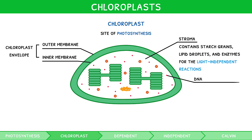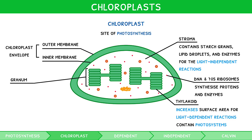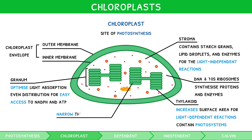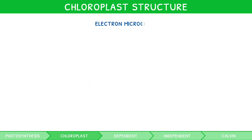They contain their own DNA and 70S ribosomes to synthesise proteins and enzymes. They contain systems of internal membranes known as thylakoids, increasing the surface area for the light-dependent reactions. Within each thylakoid are multiple regions of space with a high density of chlorophyll, known as photosystems, each containing a reaction centre. Thylakoids are stacked on top of one another to form towers known as grana, which form deep towers to optimise light absorption and are evenly distributed throughout the stroma for easy access to NADPH and ATP. Inside the thylakoid is the narrow thylakoid space, to assist in establishing the H+ concentration gradient. The IB expects you to recognise these structures on an electron micrograph, for example like this.